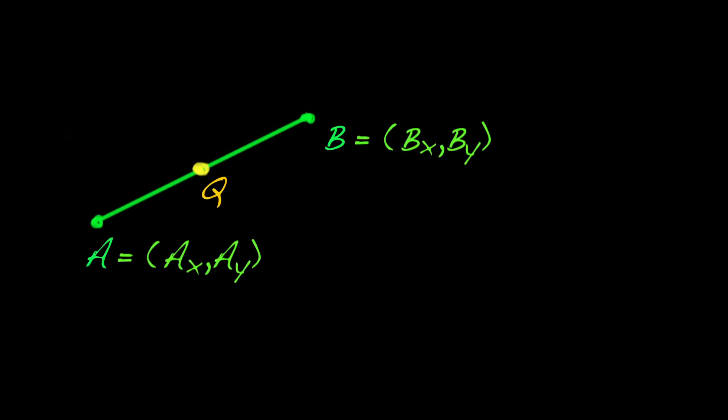Well, if you think about it for a minute, you'll realize that Q is halfway between A and B in the x direction, and halfway between A and B in the y direction. And we can compute a point like that by simple averaging.